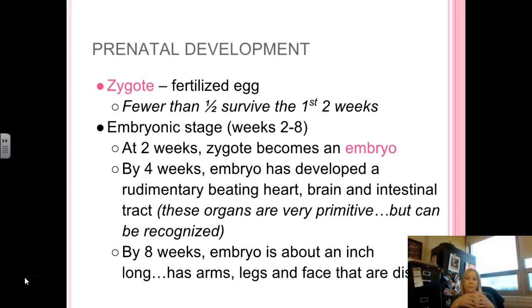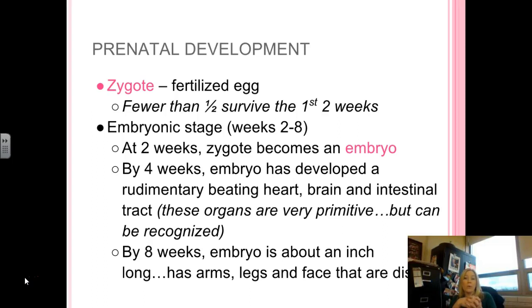Once you become the fully fertilized egg, you are a zygote. Fewer than half of zygotes end up surviving the first few weeks. In terms of pregnancy numbers, one in five pregnancies ends in a miscarriage before the first trimester ends. So the fact that many of us exist in the first place is a pretty phenomenal thing from a probability standpoint.